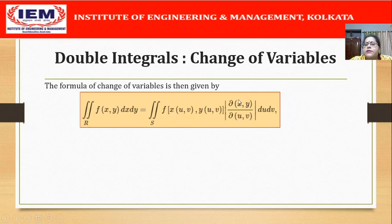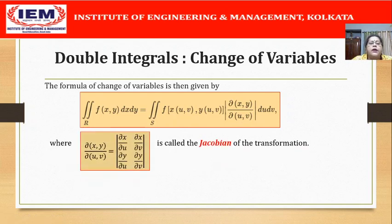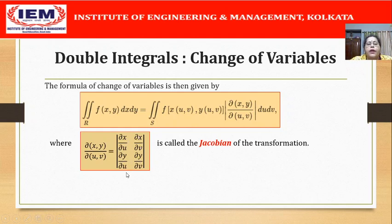The expression ∂(x,y)/∂(u,v) is called the Jacobian of the transformation, given by a 2×2 determinant whose first row contains the elements ∂x/∂u and ∂x/∂v, and whose second row contains the elements ∂y/∂u and ∂y/∂v.